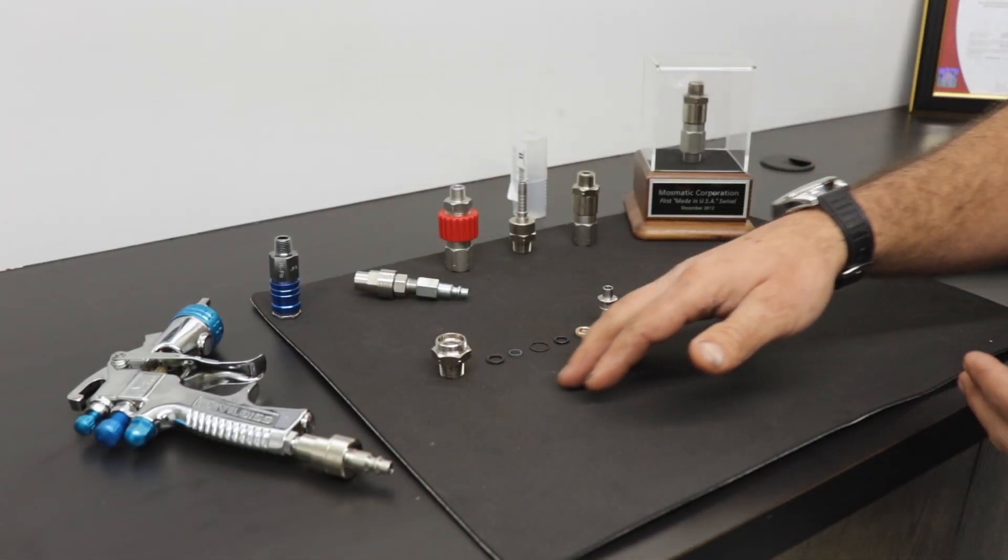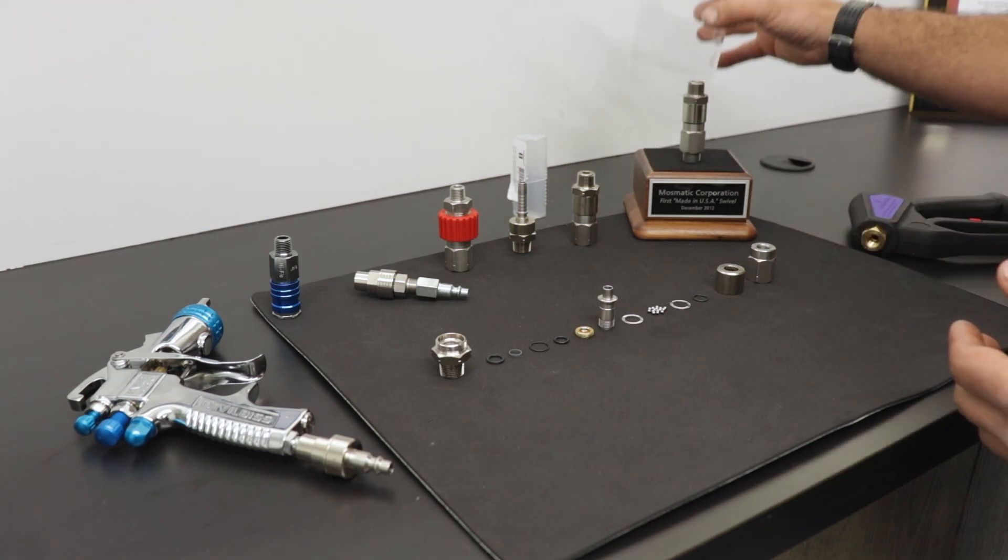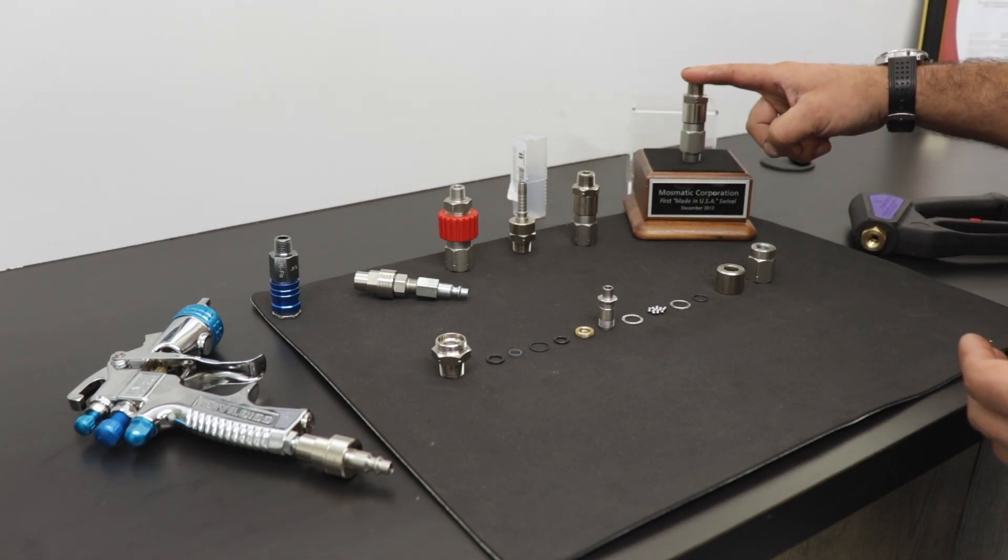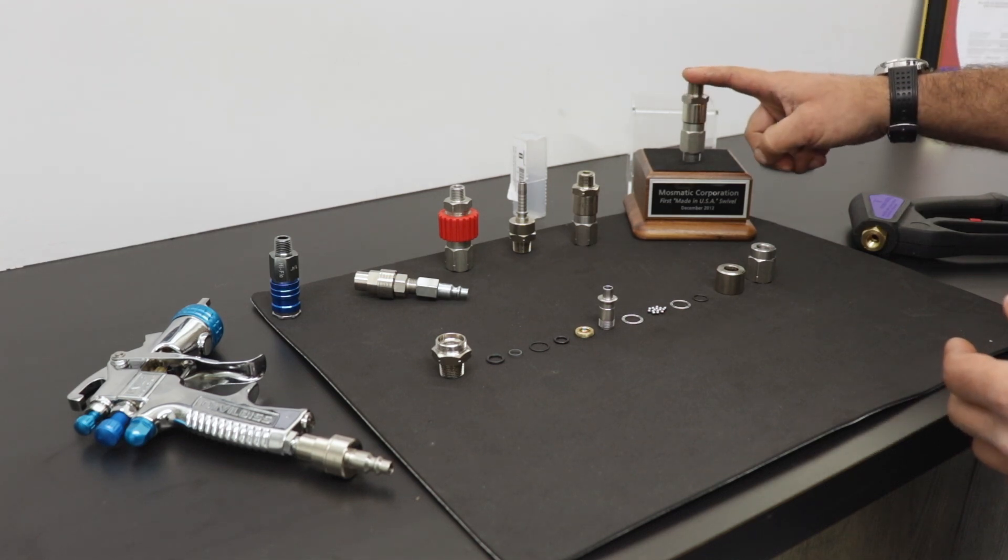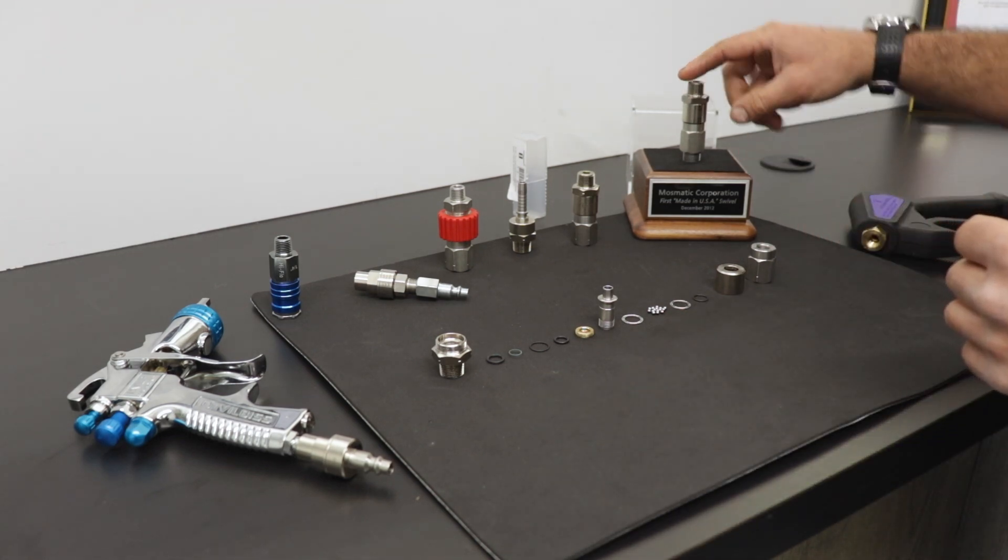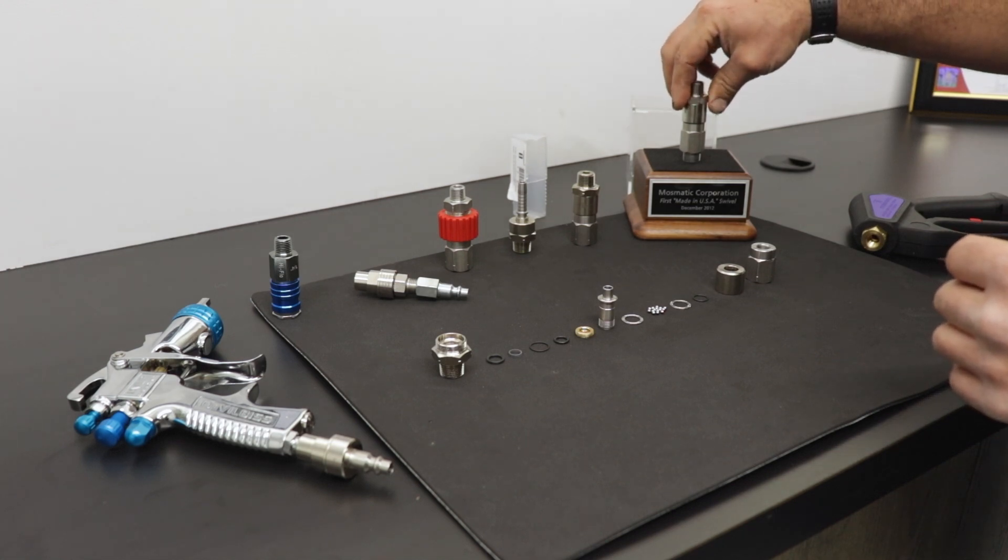I've laid out all the different internal pieces it takes to build one of these 4,000 PSI rated DGV live swivels. And I'm going to show you the true live performance under pressure that we offer later in the program.